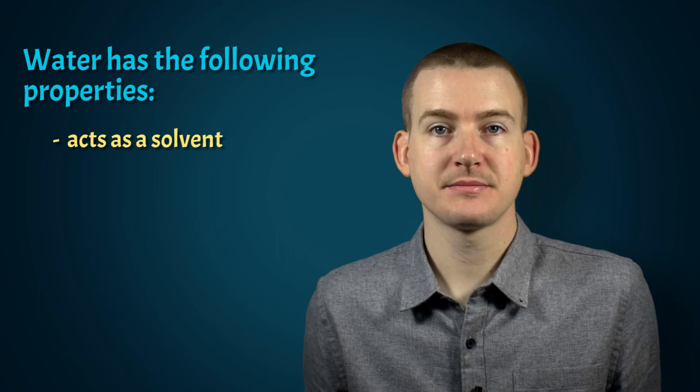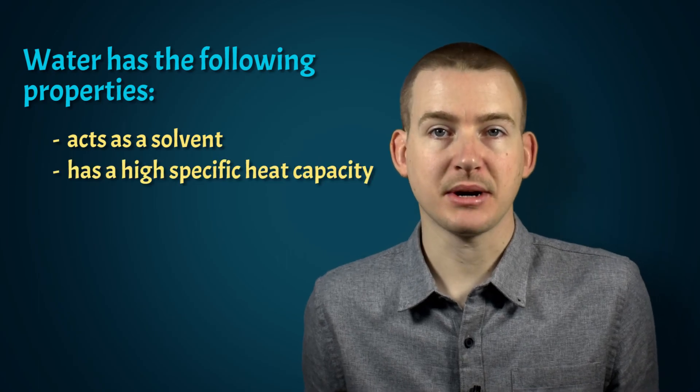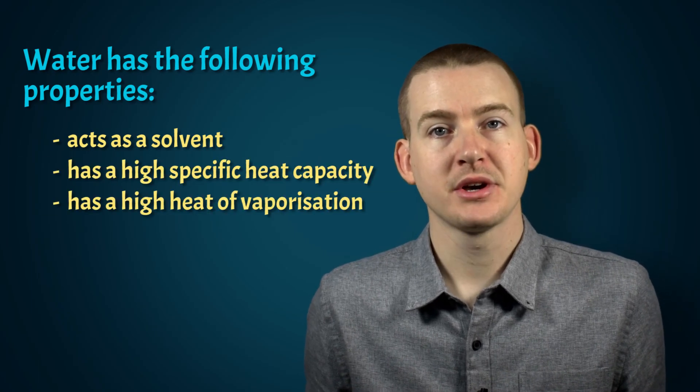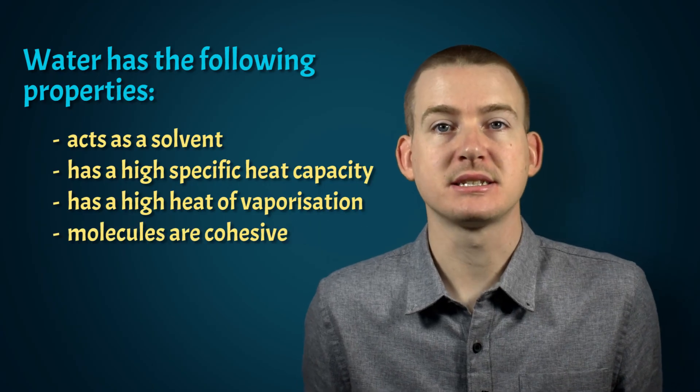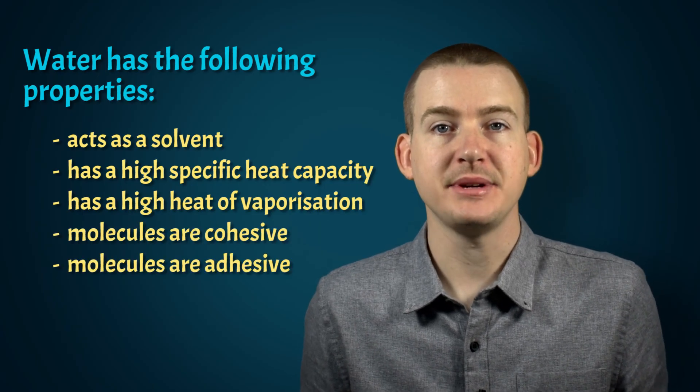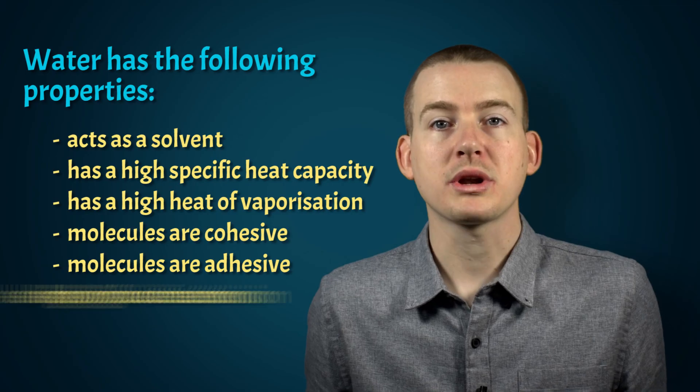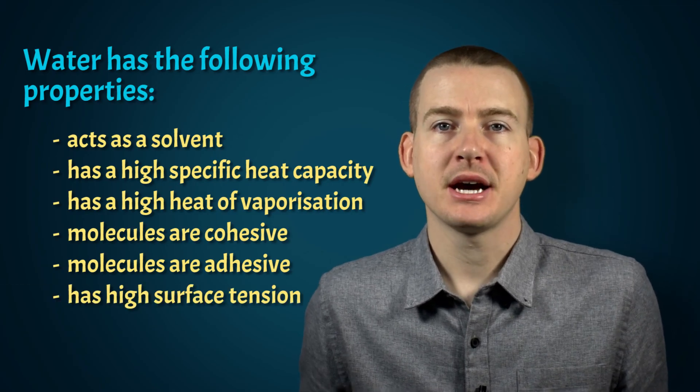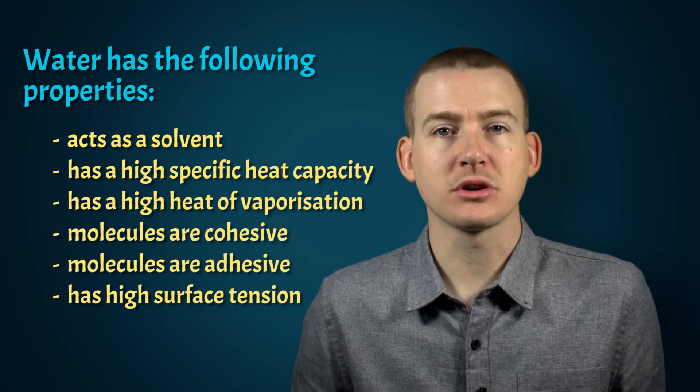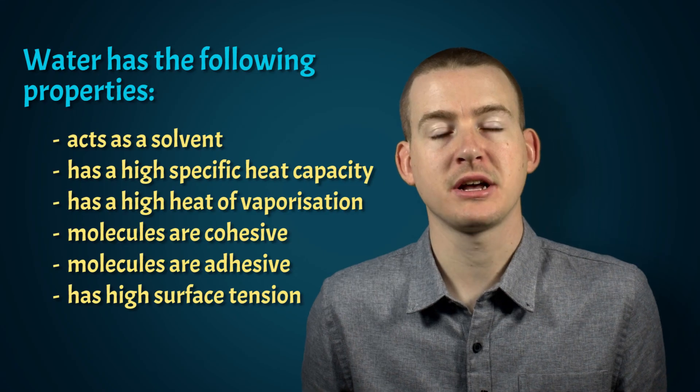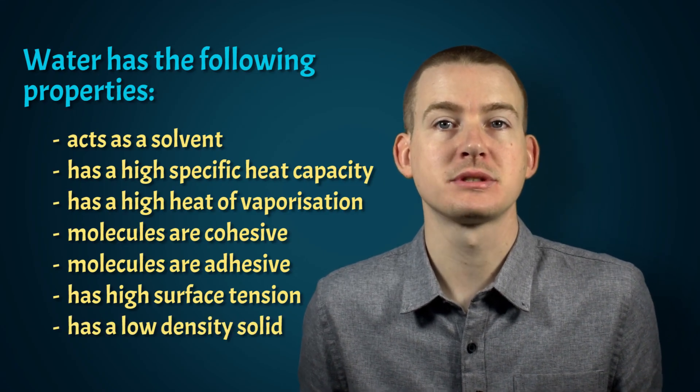To recap, the polar nature of water gives it some important properties: it allows things to dissolve in it; it has a high specific heat capacity and a high heat of vaporization; water molecules are cohesive, meaning they stick to each other; they are adhesive, meaning they stick to other things; water has high surface tension; and because hydrogen bonds force solid water to form in a crystalline structure, ice is less dense than water and therefore floats.